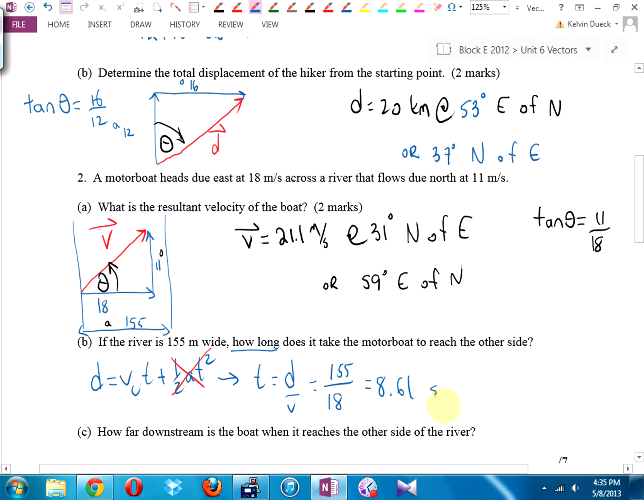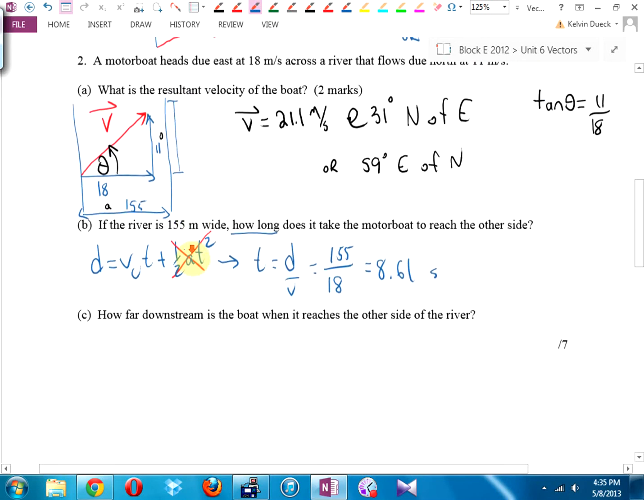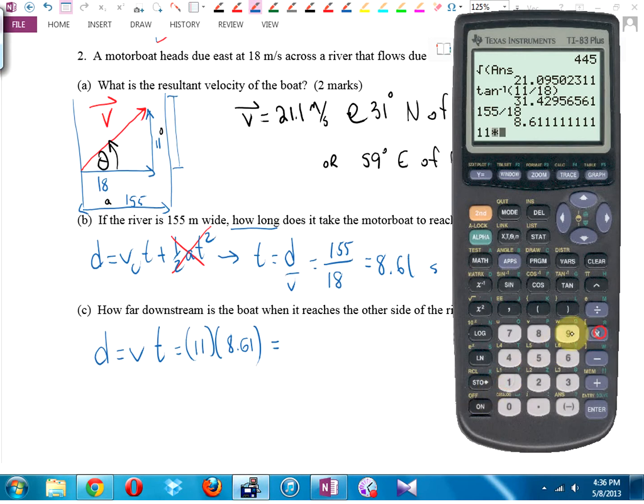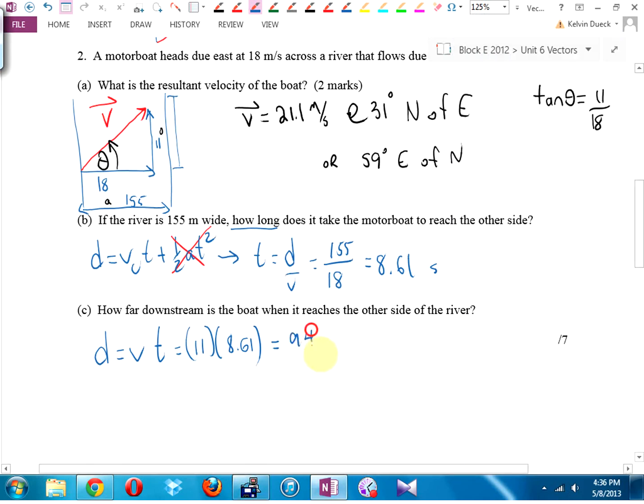How far downstream? Okay. Downstream, we're talking about that distance. That's going to be v times t. Yes, plus a half a t squared, but a is zero. Where'd the vi go, Mr. Duke? Well, if a is zero, I got a constant velocity, so v initial equals v final equals v average equals v. Which v? In the same direction as the distance that we're looking at. So it's going to be 11 times the answer from b, 8.61. And I get 94.7 meters. It'll drift 94.7 meters downstream. One mark, one mark.